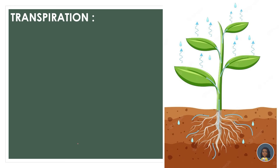Let us begin with today's portion. This is the most basic and easy diagram for transpiration — it shows a small well-watered plant. Transpiration is not entirely new; when we discussed absorption by roots in the previous chapter, we already touched on it. Transpiration is basically the removal of water in the form of water vapor. When water comes out of plants in the form of water vapor, that process is known as transpiration.